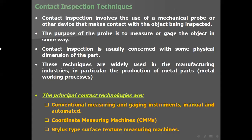Contact inspection involves the use of a mechanical probe or other device that makes contact with the object being inspected. The purpose of the probe is to measure or gauge the object — its location, size, slots, and other features. Contact inspection is usually concerned with physical dimensions of the part. These techniques are widely used in manufacturing, particularly in metal-working processes where CMMs are quite common for automated inspection.